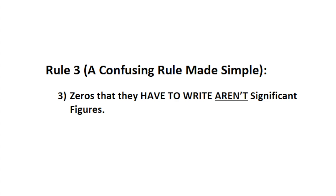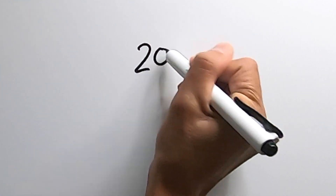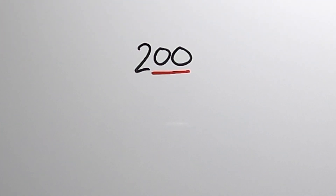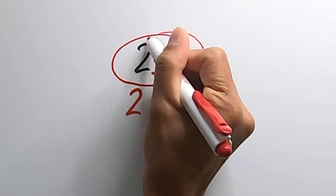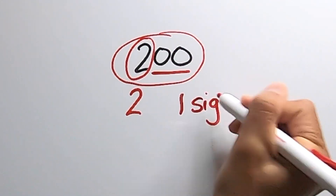The confusing rules are the ones about the zeros that are not between two non-zero numbers. These are the rules I'm going to make simpler for you. Rule number three: zeros that they have to write are not considered significant figures. In the number 200, for example, the two zeros have to be written. If they were not written, this would be the number 2 instead of 200, which is a big difference. So the number 200 actually only has one significant figure.